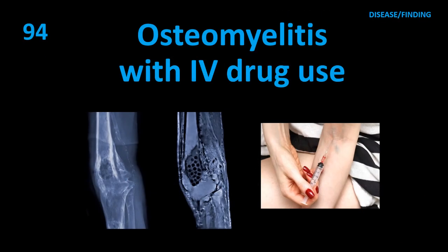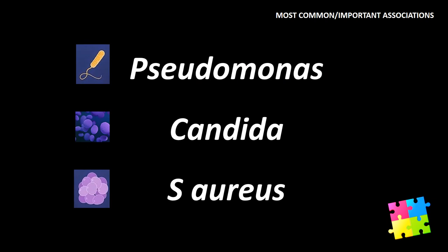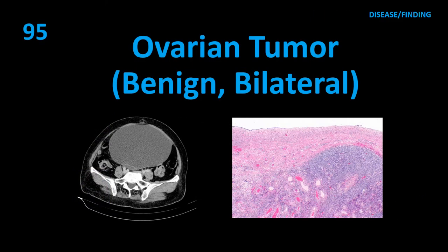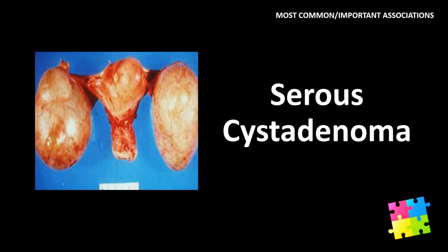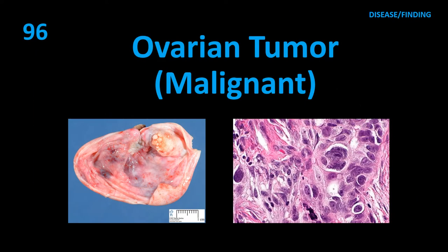Item 94: Osteomyelitis with IV drug use. Item 95/96: Ovarian tumor malignant — Pseudomonas. Malignant ovarian tumor — serous cystadenocarcinoma.